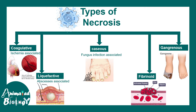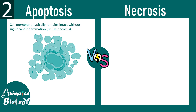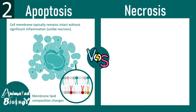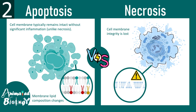Necrosis is always associated with some sort of pathology. In apoptosis, the cell membrane typically remains intact — the bilayer remains intact and integrity is not lost. However, it is important to note that in apoptosis the membrane lipid composition changes: phosphatidylserine, which is normally in the inner leaflet, is displaced to the outer leaflet. In necrosis, membrane integrity is lost, leading to leakage of fluid and cytoplasmic material outside the cell.